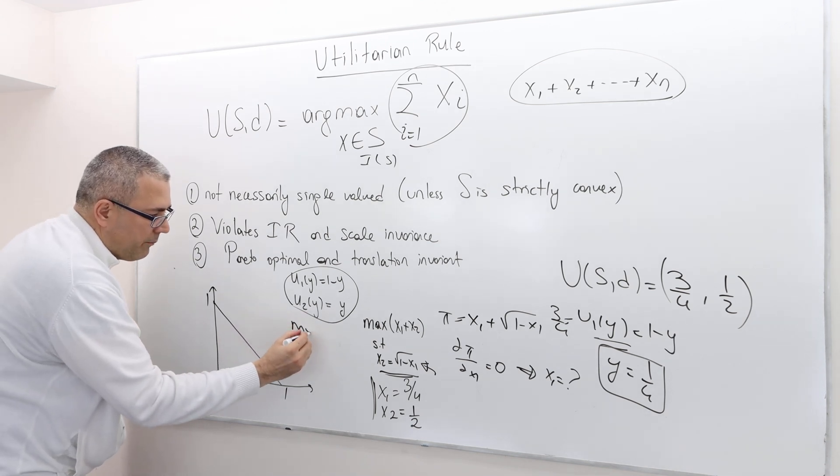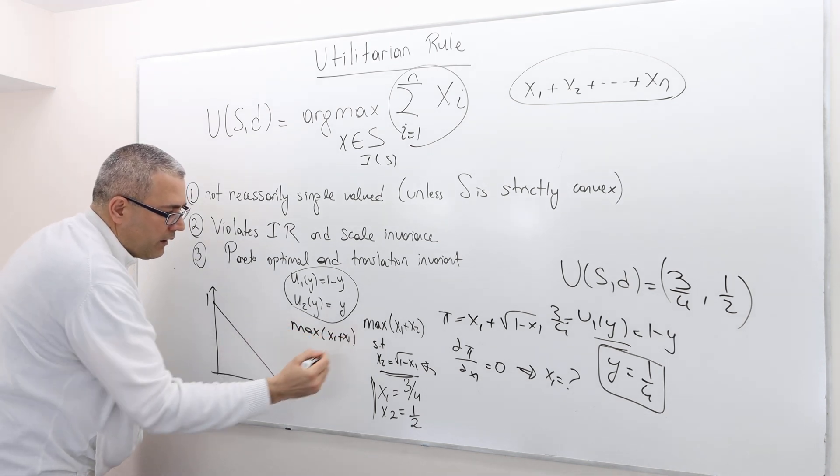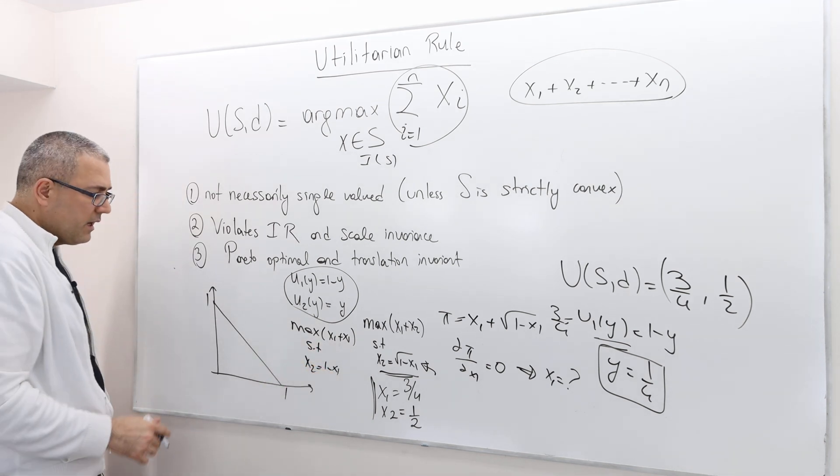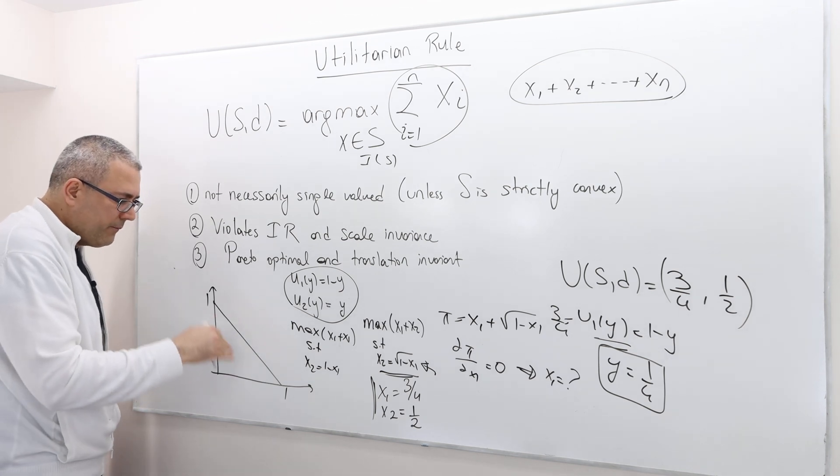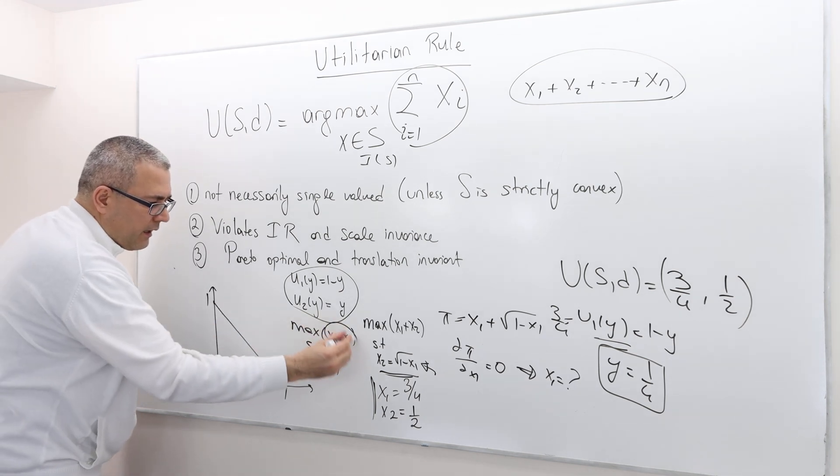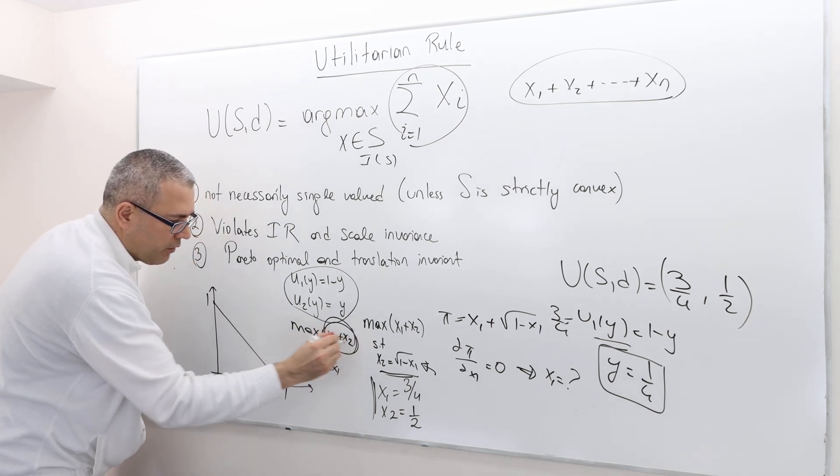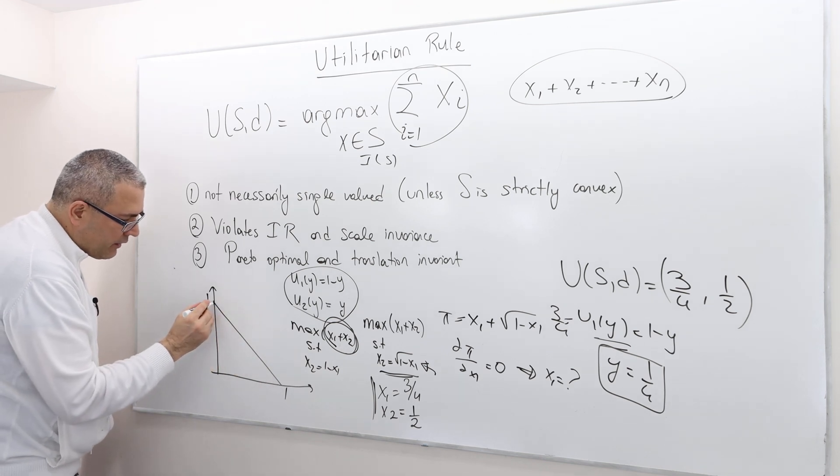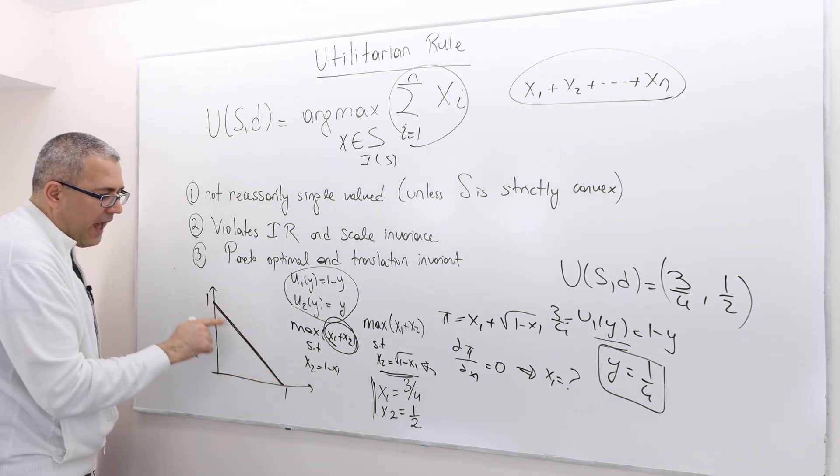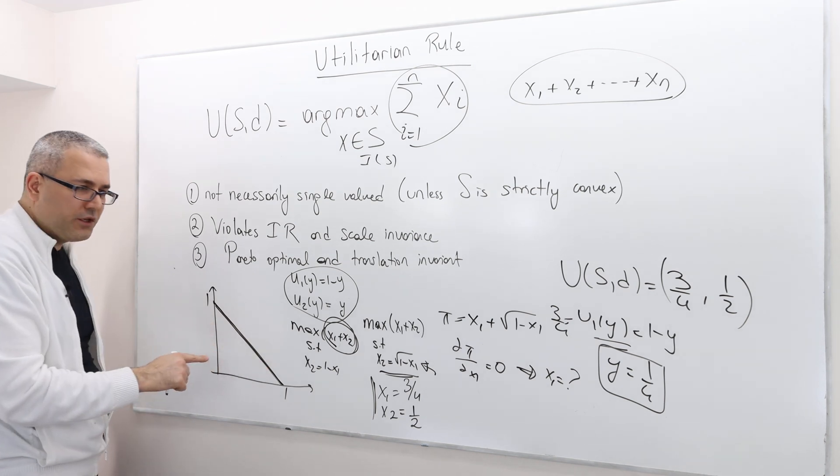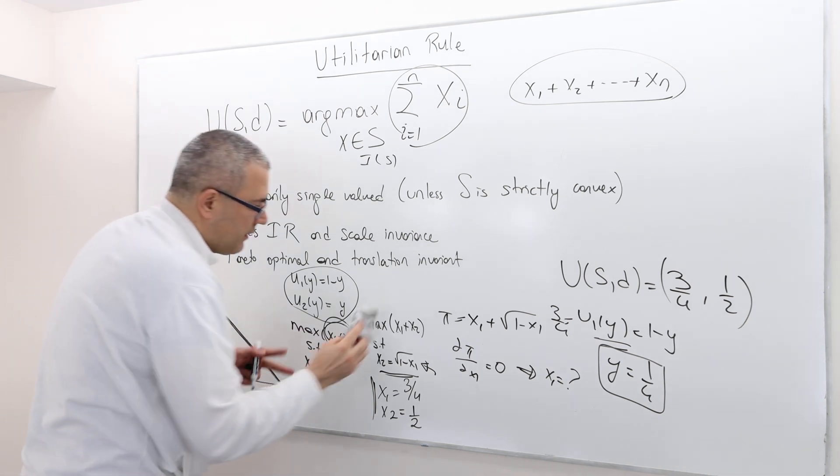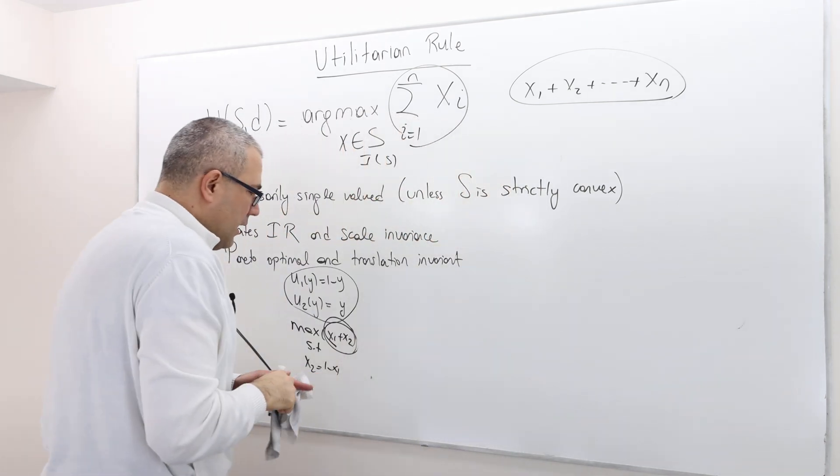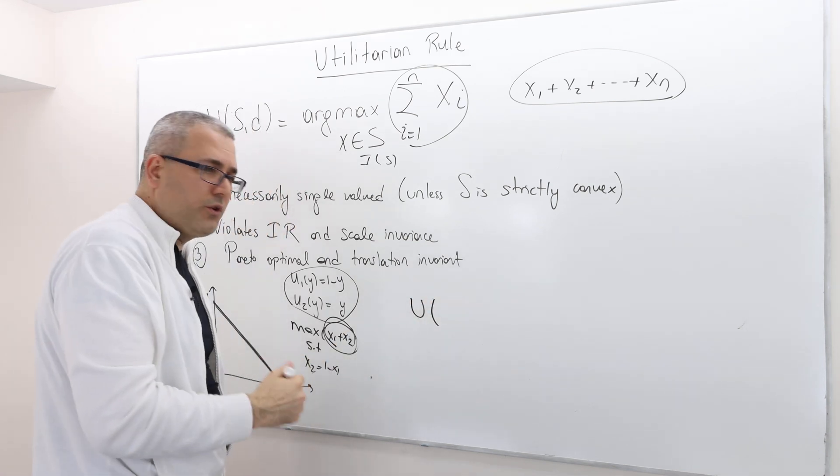So how do I do that? Maximize x1 plus x2 subject to x2 equals 1 minus x1. If you draw the level curve of x1 plus x2 and use this as the constraint, you're going to see that the constraint and the level curves are on top of each other.